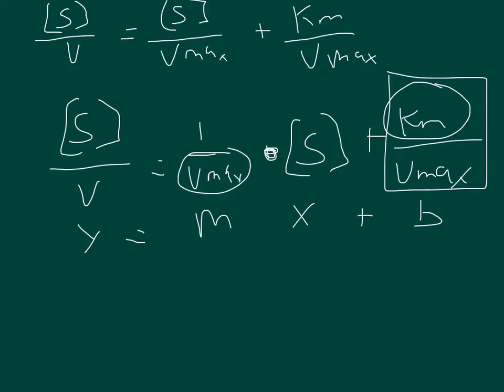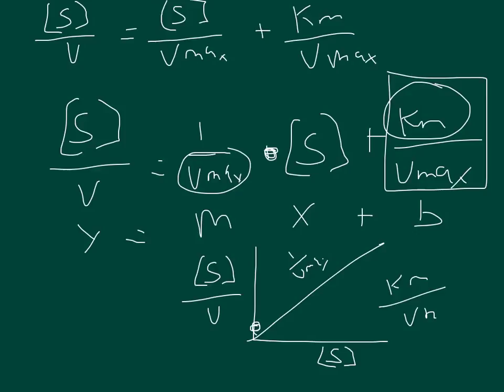And so this is actually a graph of the substrate concentration over V versus the substrate concentration by itself. And you just get a straight line. The slope is equal to 1 over Vmax and the y-intercept wherever that happens to be is equal to Km over Vmax. And you don't really have to remember that because you get it from the equation, it's right there.